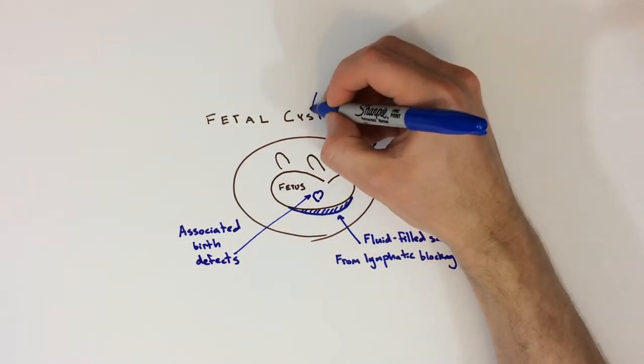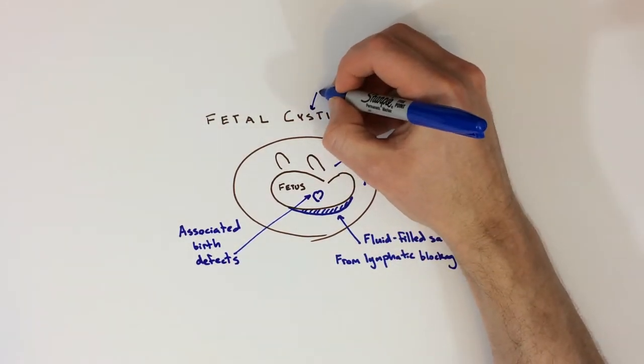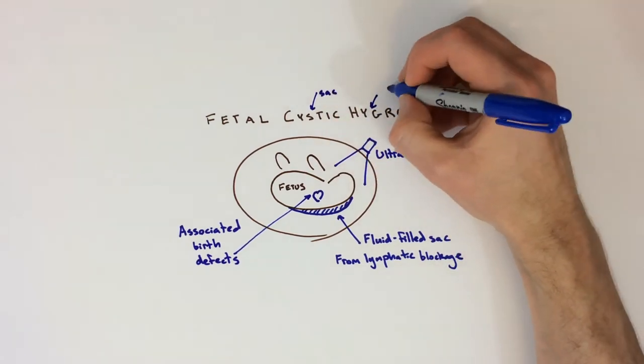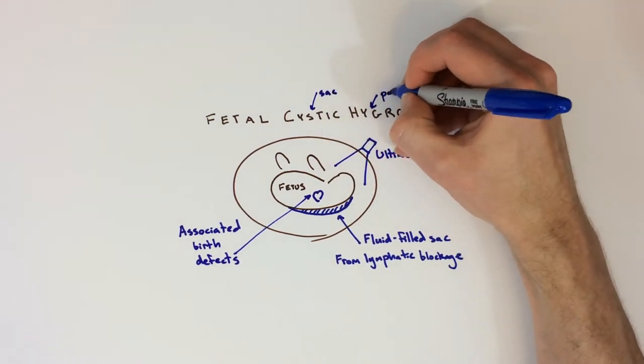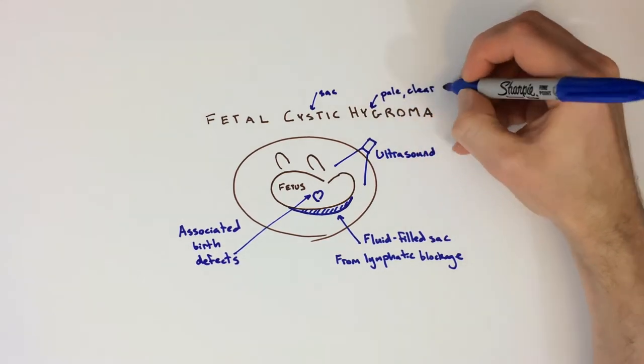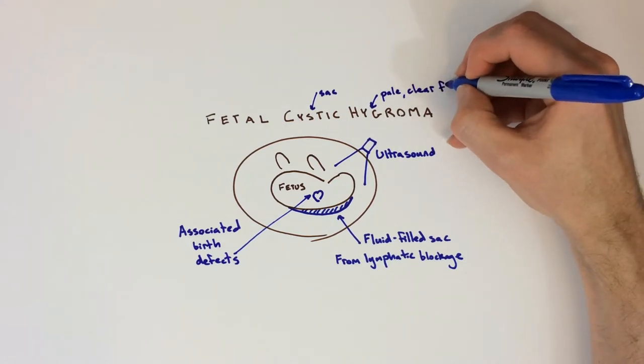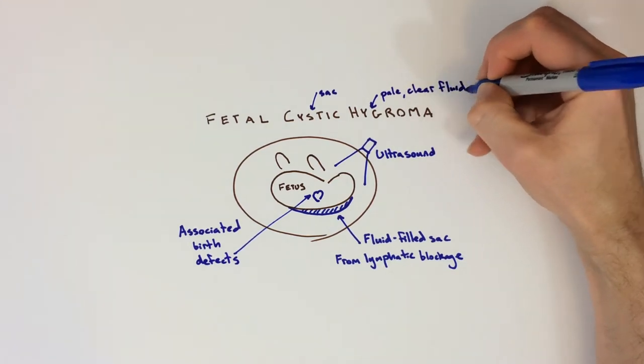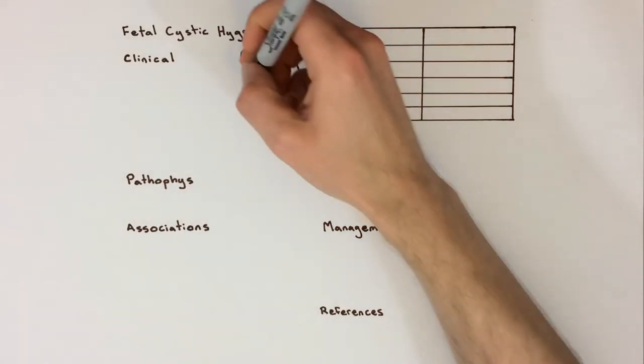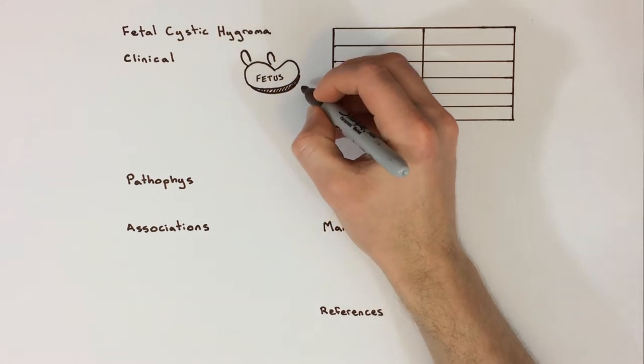In the name cystic hygroma, the cyst part refers to a fluid-filled sac, and hygroma refers to a collection of serous fluid. Put together, these words refer to a malformation of the lymphatic system in which lymph, which is a combination of interstitial fluid and white blood cells that has entered the lymphatic vessels on its way back to the bloodstream, gets blocked and collects as a swelling that appears lucent, or black, on ultrasound.